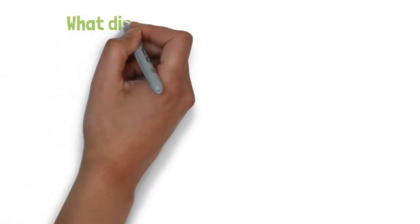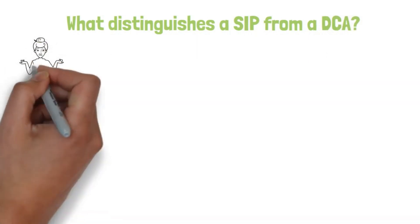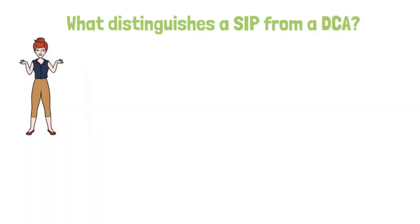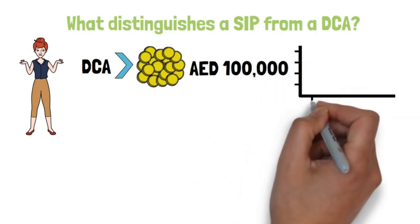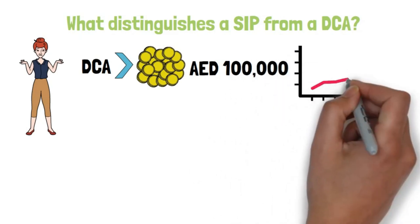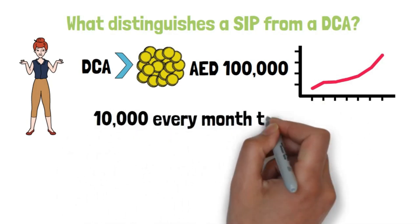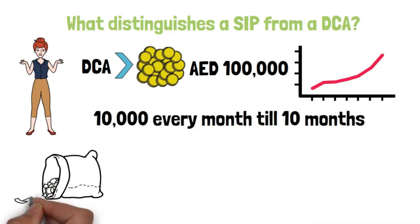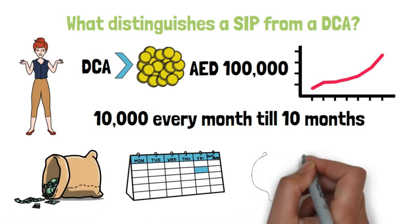What distinguishes a SIP from a DCA? Many people may be wondering how it differs from a systematic investment plan, SIP. Well, the DCA is a technique in which someone with a lump sum, say, AED 100,000, agrees to invest that lump sum systematically over a long period of time, say AED 10,000 at the end of every month for the next 10 months. This also entails a specific amount invested consistently and on a regular basis until the lump sum is depleted.